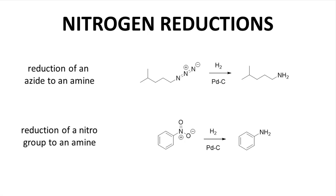Let's finish with a couple reductions of nitrogen atoms. We can identify reductions of nitrogen just like carbon — look for either the breaking of N–O bonds or formation of N–H bonds. Alkyl azides, which are easy to form through SN2 reactions, can be reduced to amines using many reagents, including H2 and palladium on carbon. The bottom reaction is the reduction of an aromatic nitro group to an aniline — again, there are many reagents that perform this reduction, including H2 with palladium on carbon.